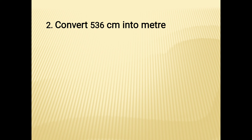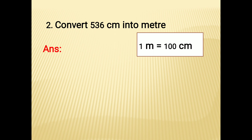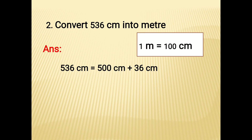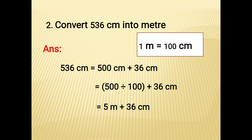Second sum: convert 536 centimeters into meters. Again, 1 meter is equal to 100 centimeters. I am going to split 536 centimeters as 500 centimeters plus 36 centimeters. Dividing 500 by 100 gives 5 meters. Therefore, the answer is 536 centimeters equal to 5 meters and 36 centimeters. Thank you, students.